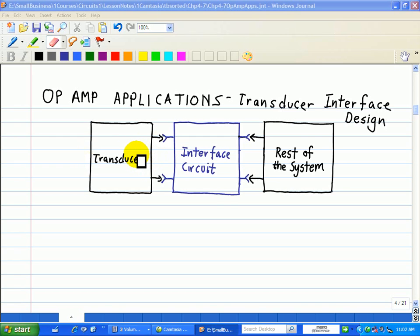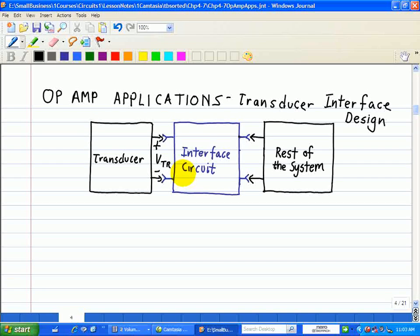Now, electrical signal processing then converts the transducer output. Let's say we'll call this plus and minus VTR, which is the voltage of the output of the transducer, which serves as the input to this interface circuit, which I'll discuss later. Now, this electrical signal processing then converts this transducer output into a form required by the rest of the system, the instrumentation system in this case. Now, the first key step is the interface circuit shown in this figure. Now, this circuit translates the transducer output signal range into a range suitable for further signal processing.